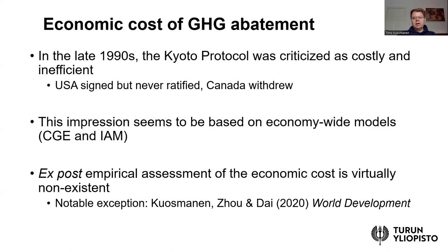As a result of this kind of evidence, there was, of course, a lot of political debate in several countries. A notable example is the USA, which originally signed the Kyoto Protocol but actually never ratified it and therefore also not implemented it. There were countries such as Canada which signed and ratified but later withdrew, perhaps following the example of the USA. And then Australia was hesitating for a very long time but eventually joined the agreement. This illustrates that economy-wide modeling results can influence high-level political decision-making.